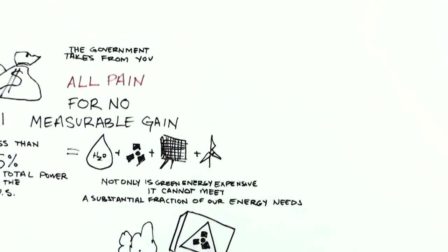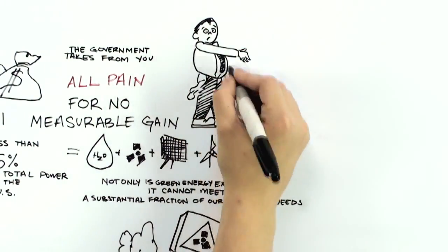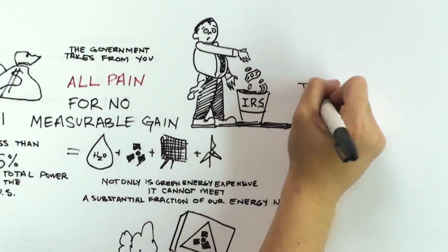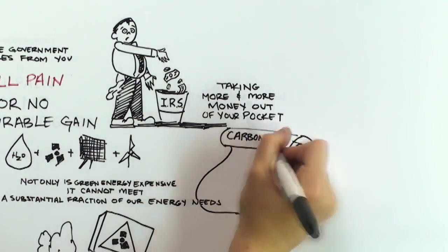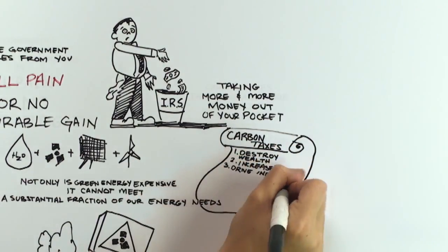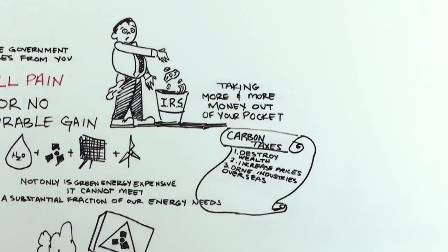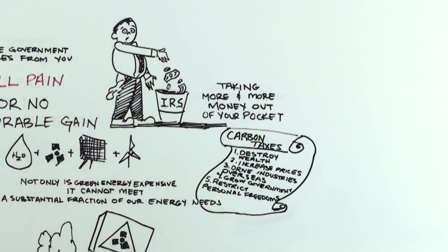Meanwhile, carbon taxes, or the hidden carbon tax that is known as cap-and-trade, only hurt consumers by taking more and more money out of your pocket. They will destroy wealth, increase the price of virtually everything, drive industries overseas where they can pollute even more, and substantially grow government and greatly restrict personal freedoms.